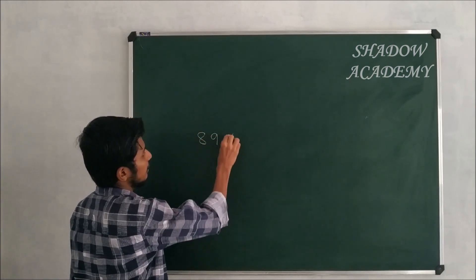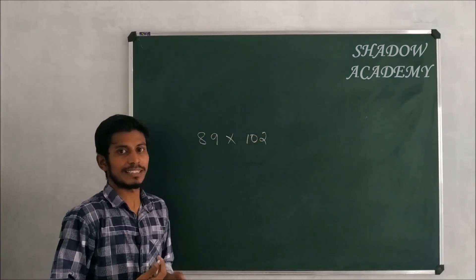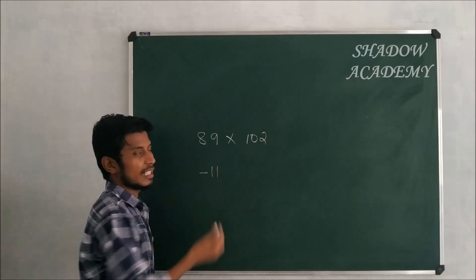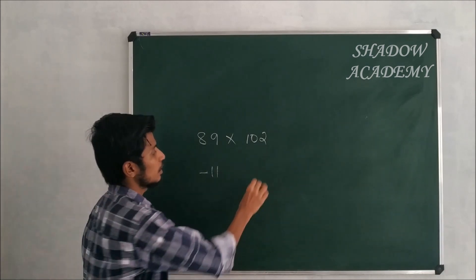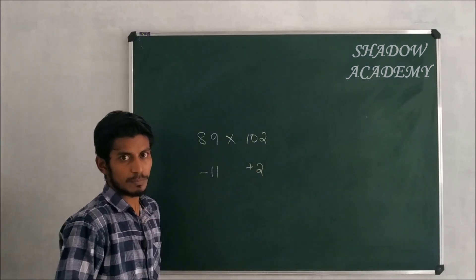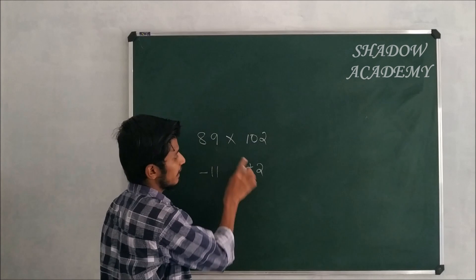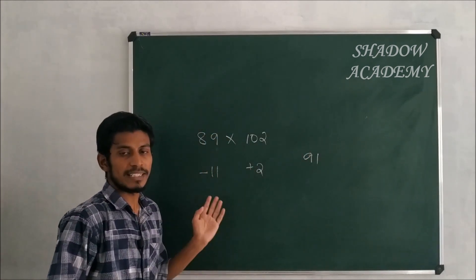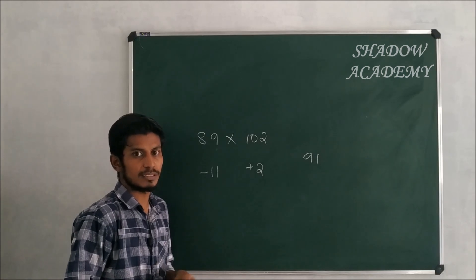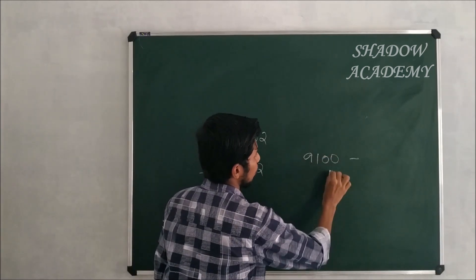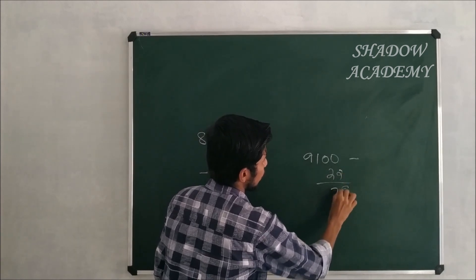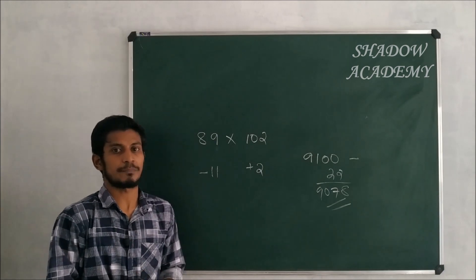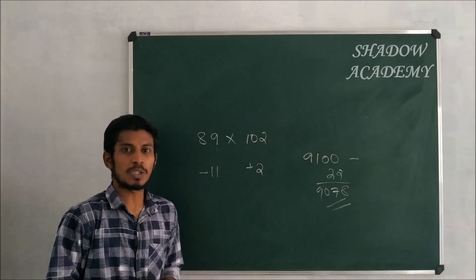89 × 91: using base 90, we get minus 1 and plus 2. 89 + 2 = 91. Then the product gives us 90 on the right side, result is 8090.